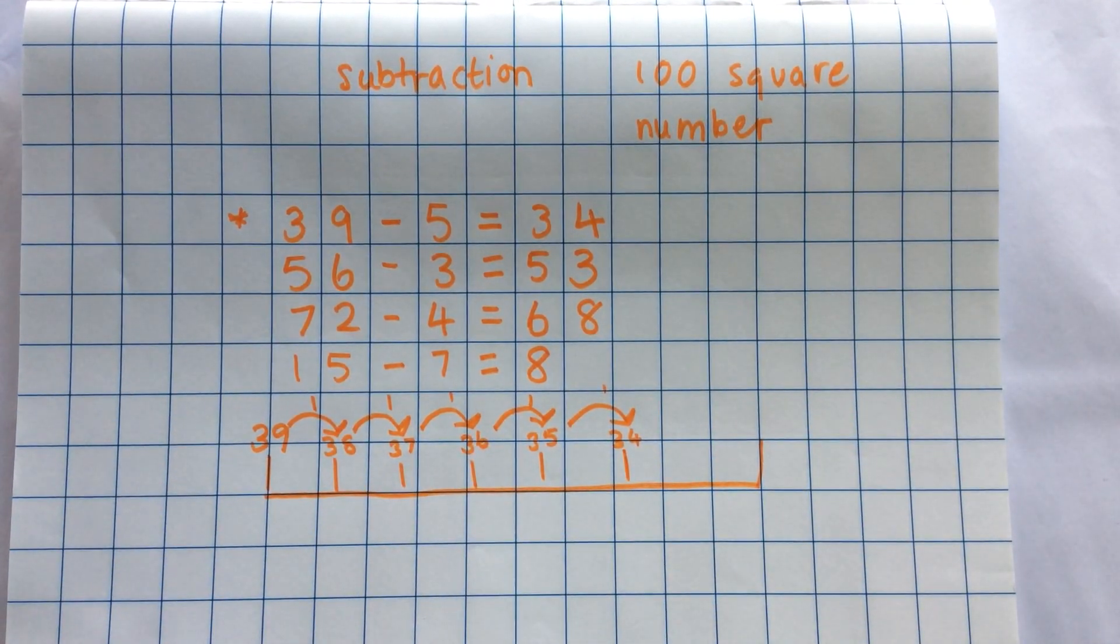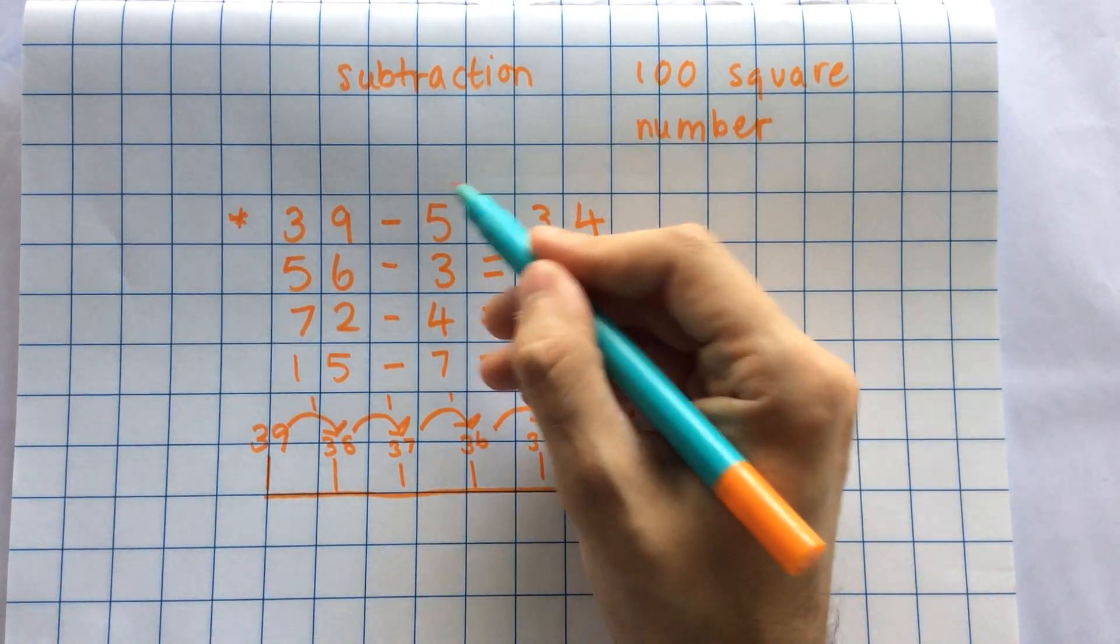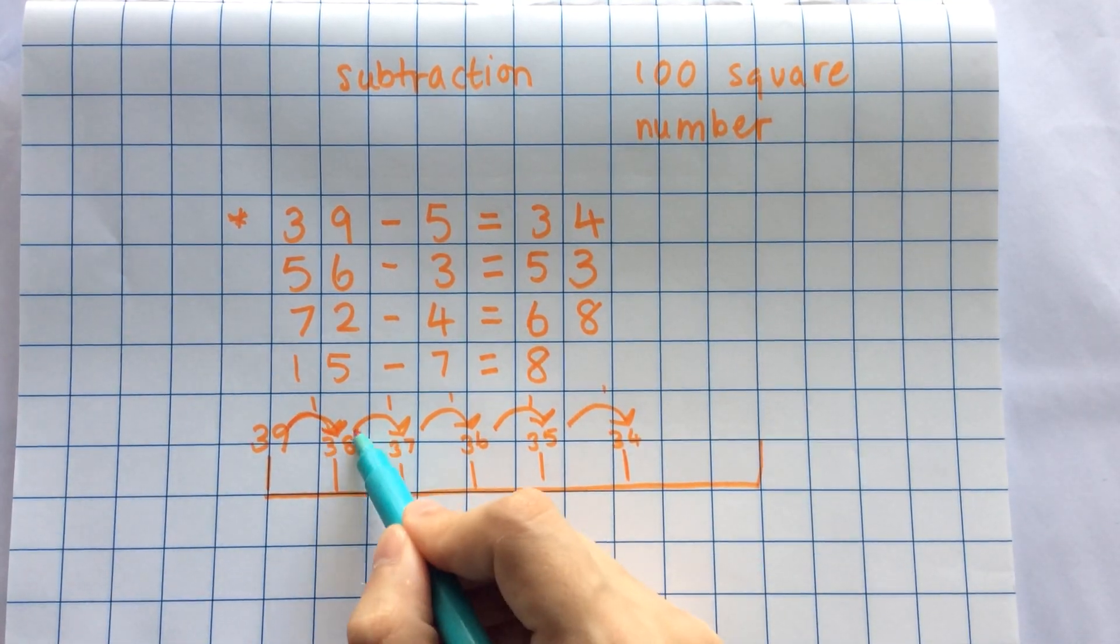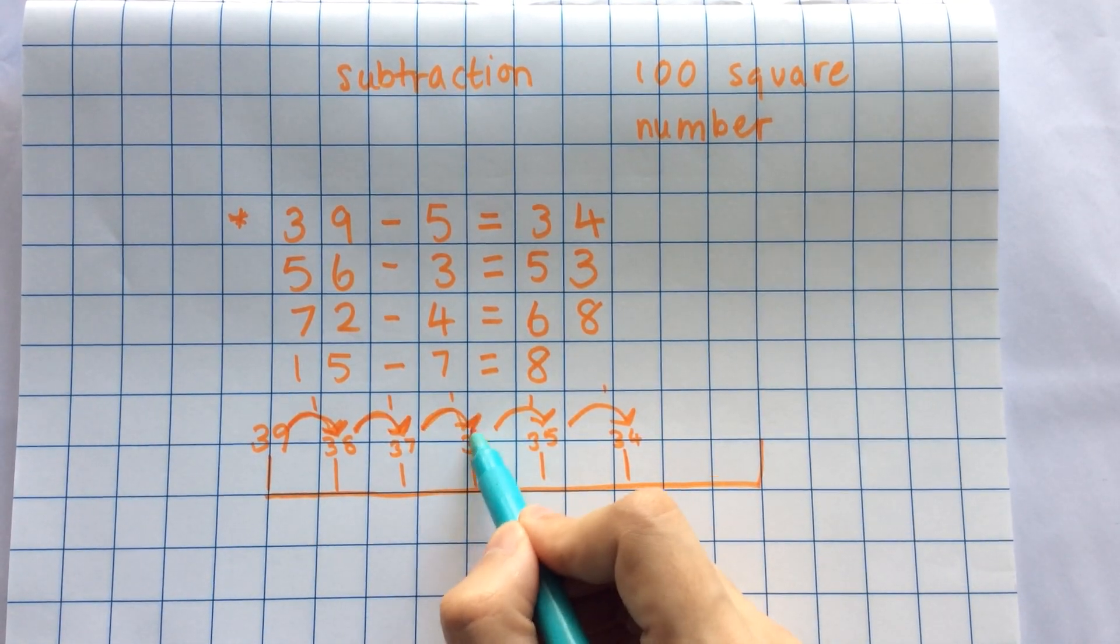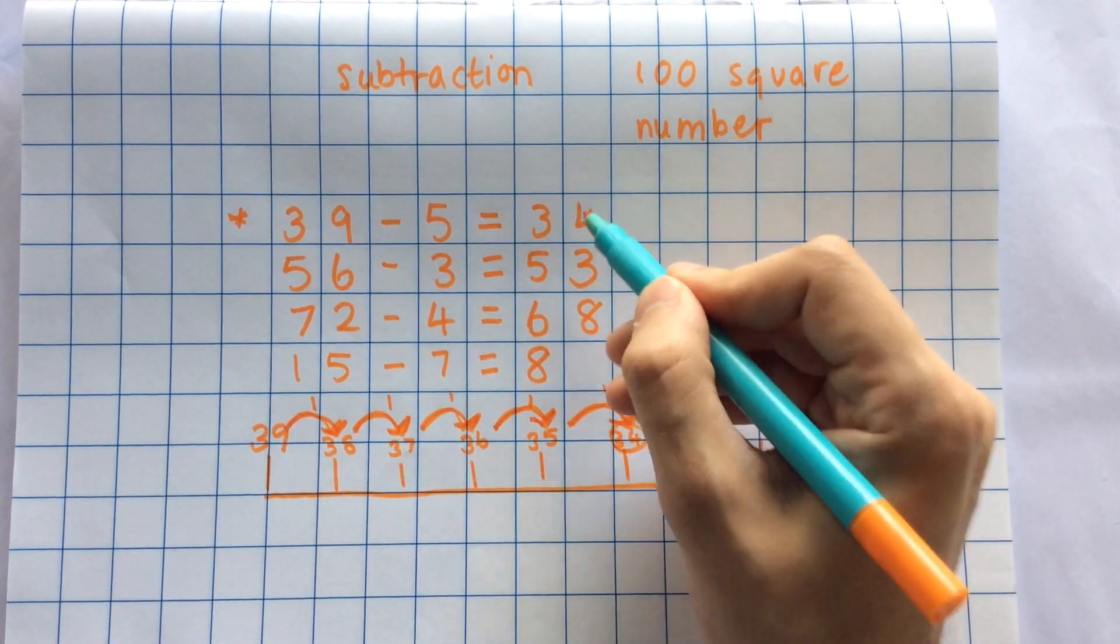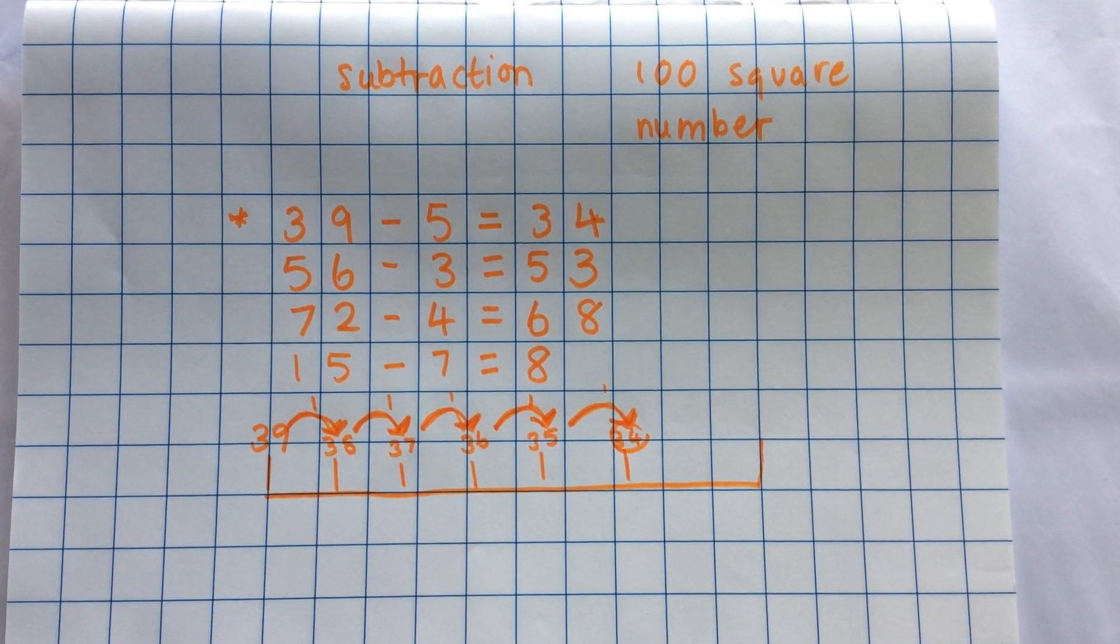I need to make sure that I check that I've jumped 5 times. Because that's what I'm taking away. 1 jump, 2 jumps, 3 jumps, 4 jumps, 5 jumps. So, there is my answer, 34.